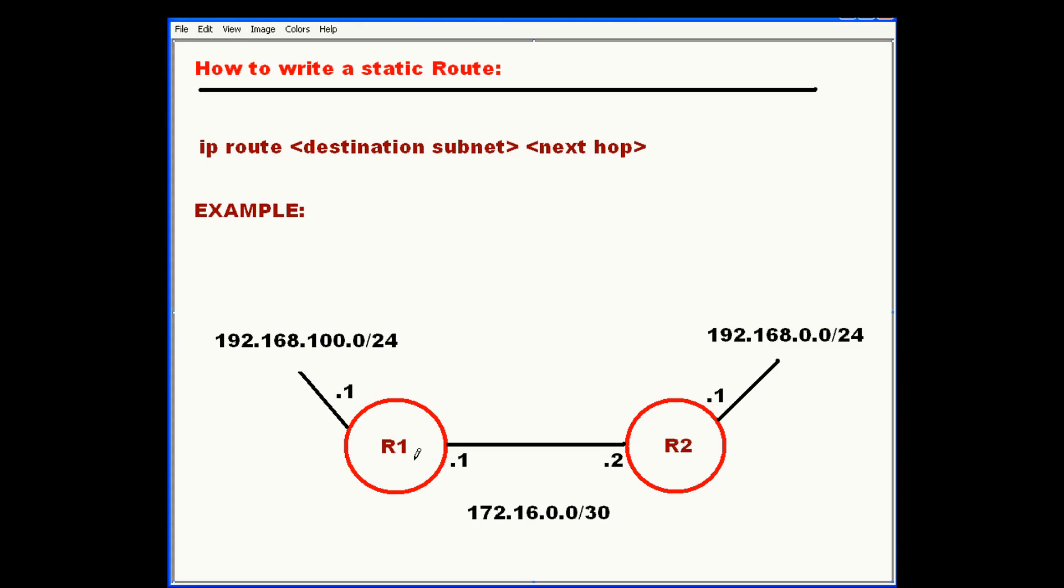Connected routes are the most trusted because they have an administrative distance of zero. Static routing has an administrative distance of one. All those different routing protocols have different administrative distances. The lower the administrative distance, the more trusted that device believes in that route. So if you have contradicting route entries but one has a lower administrative distance, the router is going to trust that lower administrative distance route.